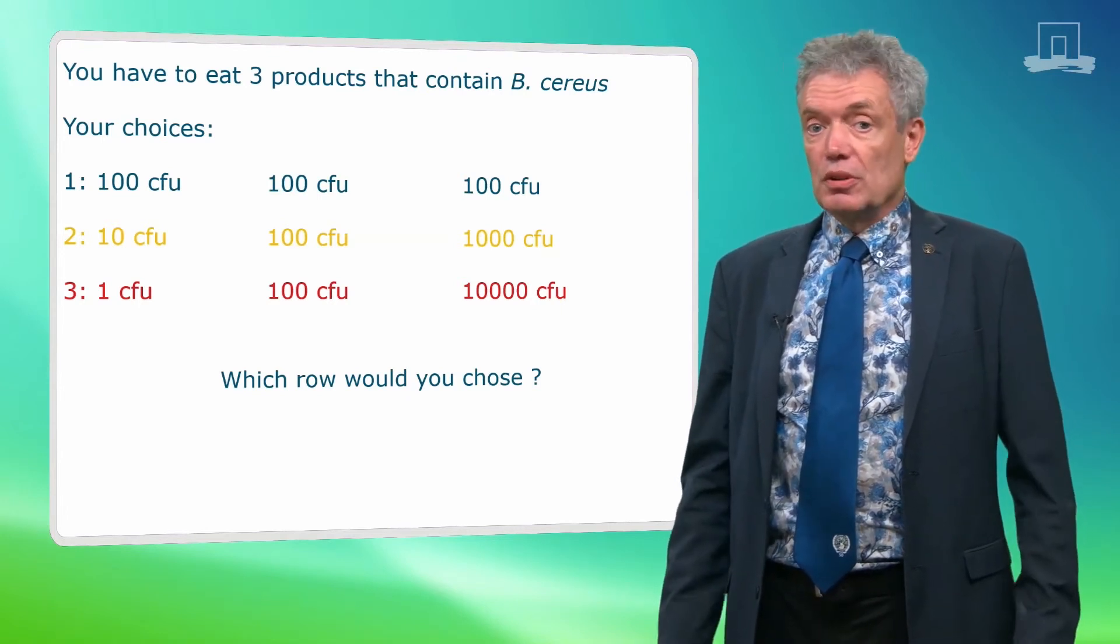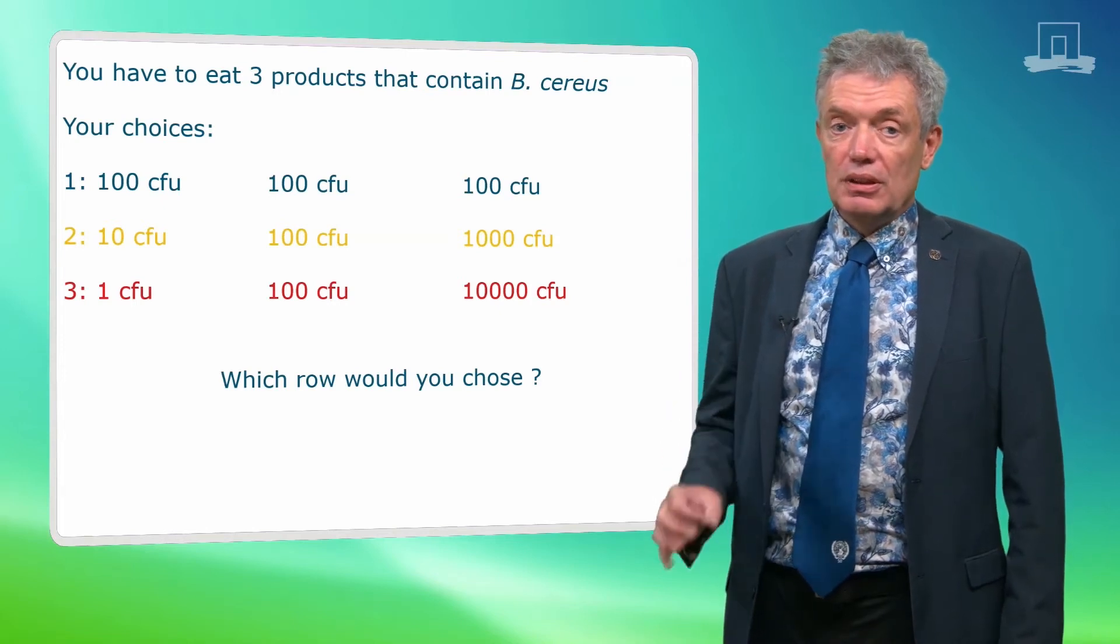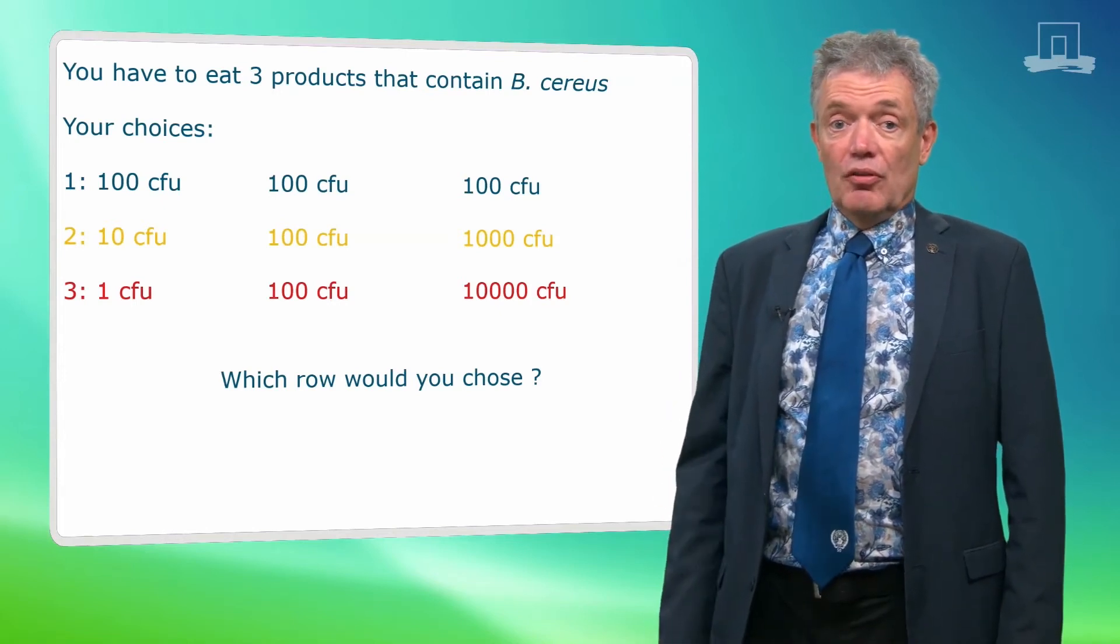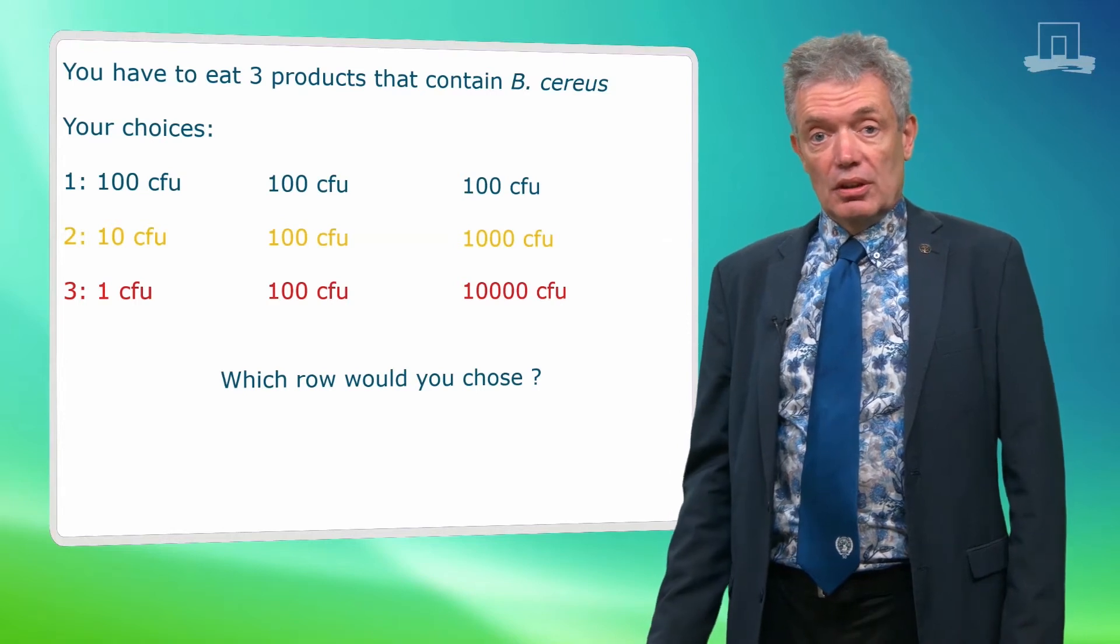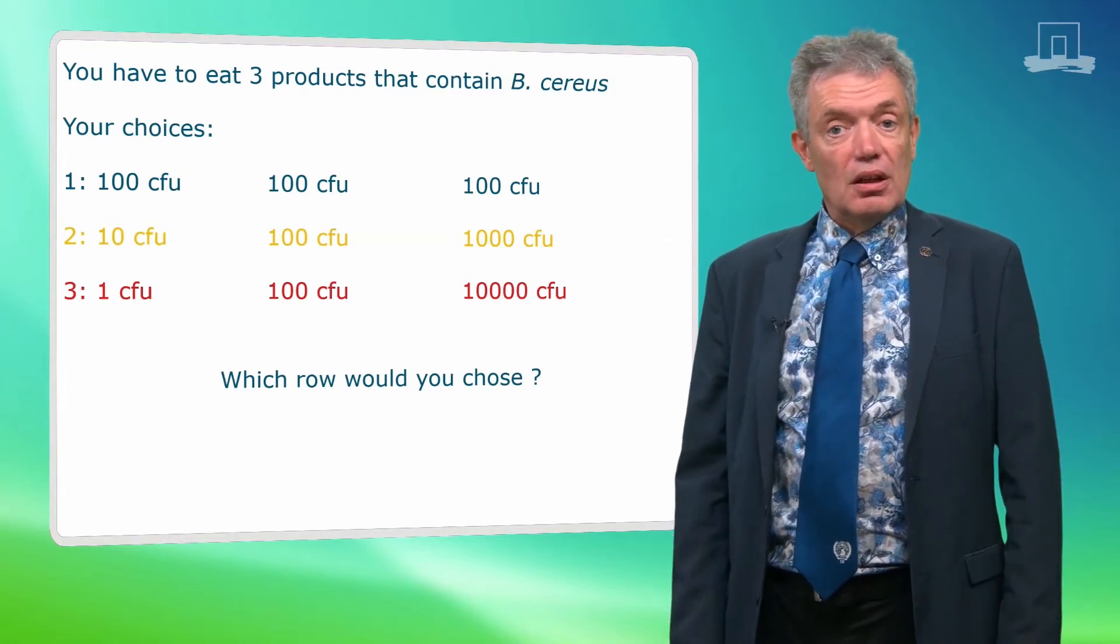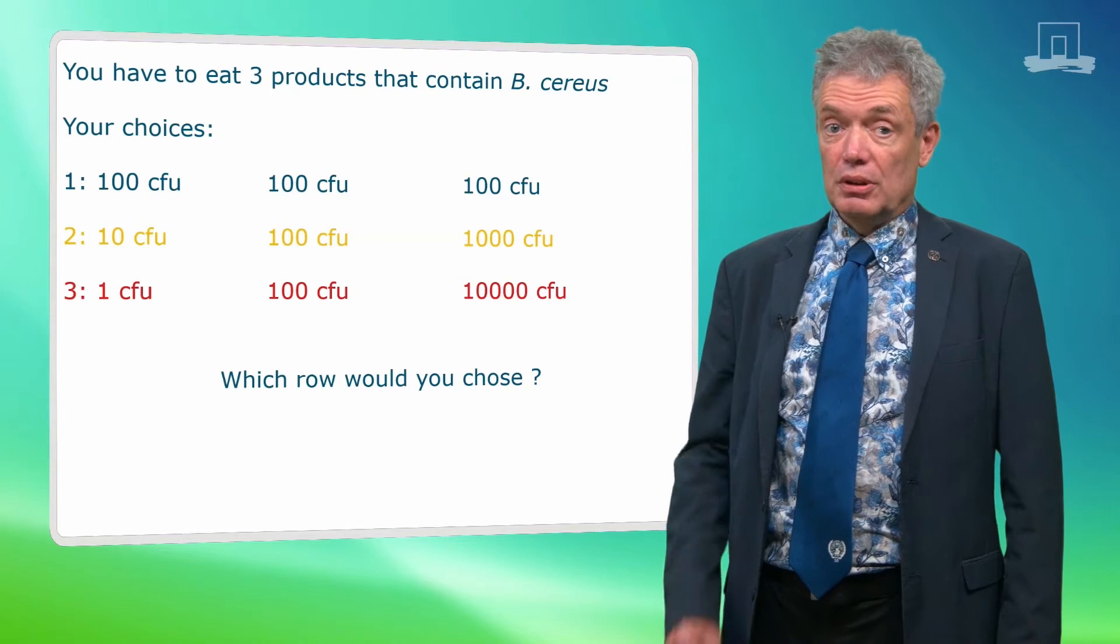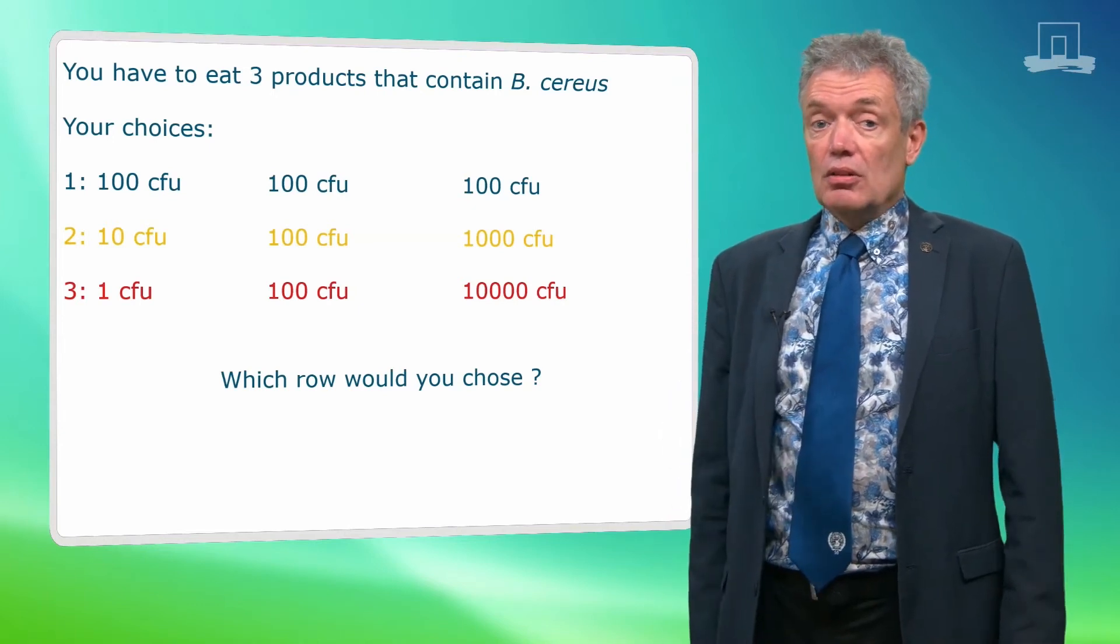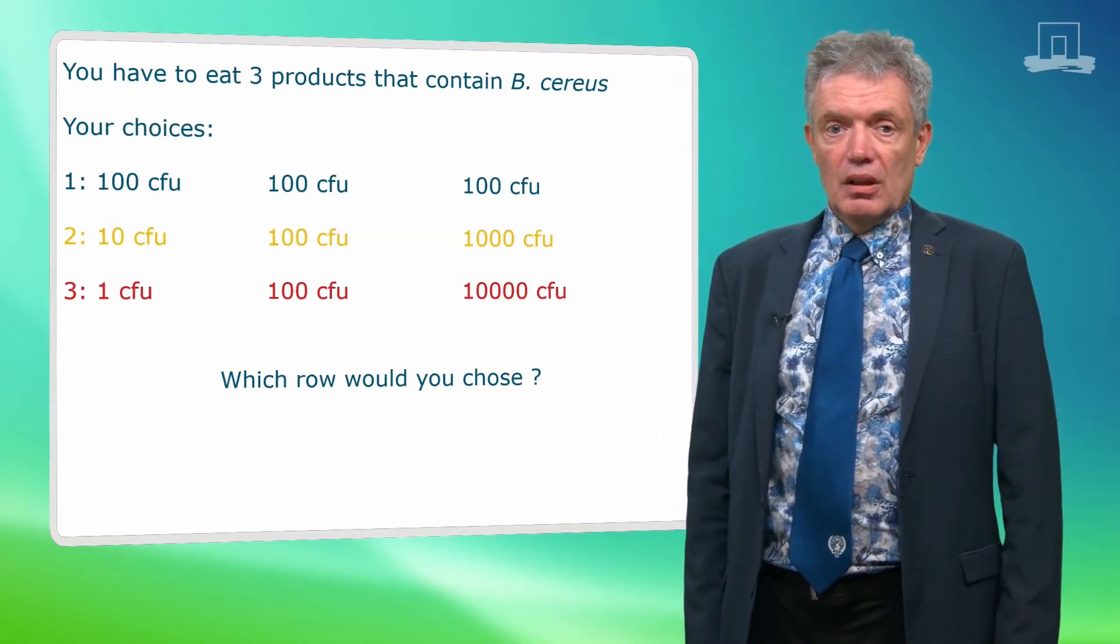If you would consume the three products in row 1, you would ingest 300 bacilli. For row 2, 1,110 and for row 3, 10,101. So I would take the products in row 1. The total exposure is lower.